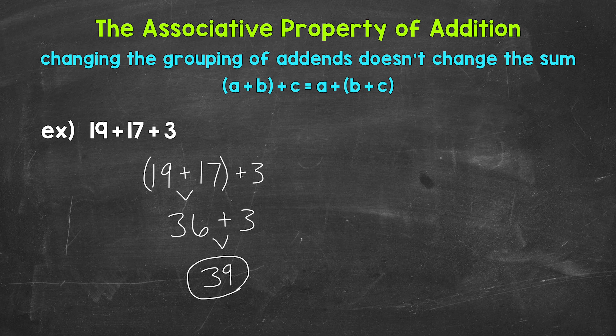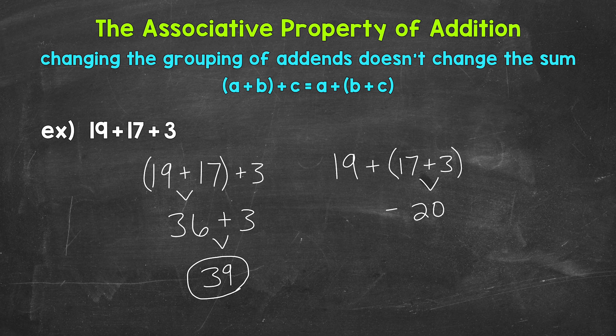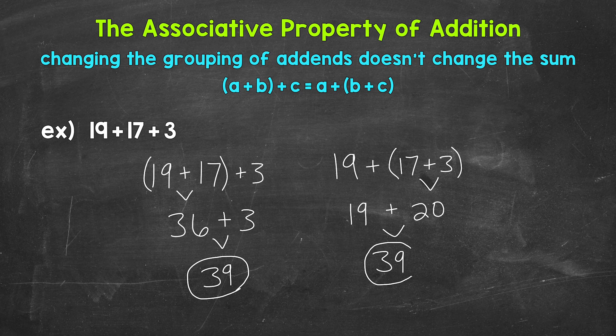Now let's group 17 and 3 and see if we get the same thing. So, 19+(17+3). Now we can add, starting with the parentheses. 17+3, that equals 20. Bring down the addition sign and the 19. We end with 19+20, which equals 39.